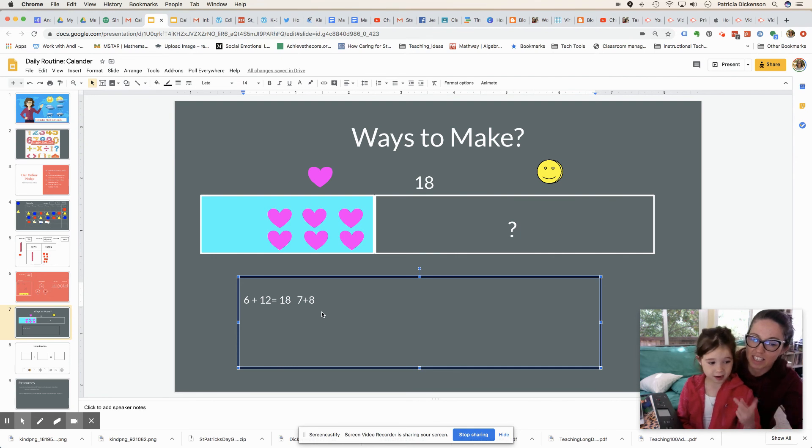Nine, ten, eleven, twelve, thirteen, fourteen, fifteen. How many more do we need to get to 18? Seven plus eight. And how many more to get to 18? We're at 15, 16, 17, 18. Plus three. Awesome. Wow. We got three more.